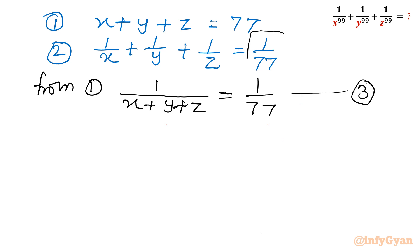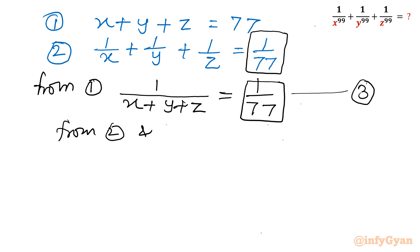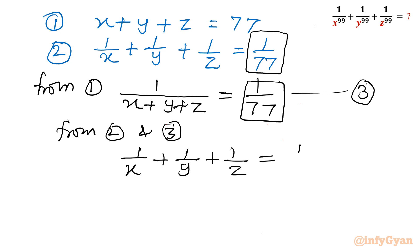Now you can see the right-hand side of equation 2 and the right-hand side of equation 3 are both 1 over 77, so they are the same. From equations 2 and 3, we can write 1 over x plus 1 over y plus 1 over z equal to 1 over x plus y plus z, where xyz is nonzero as per the problem.